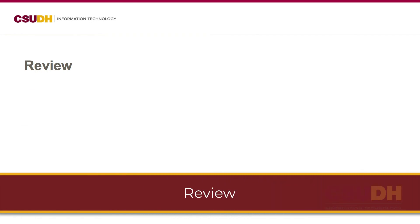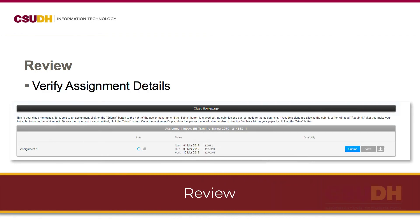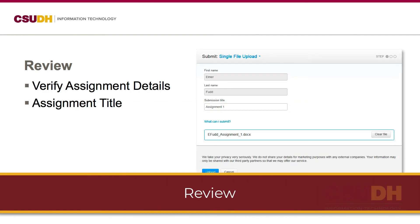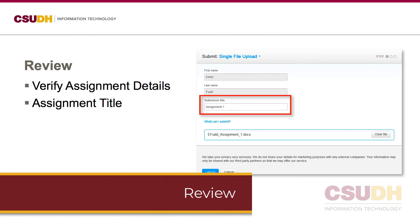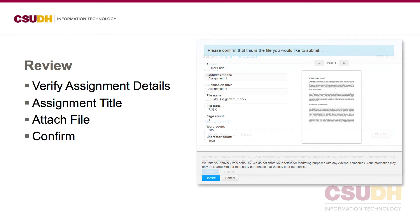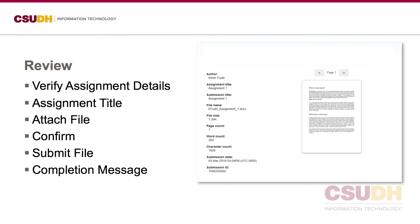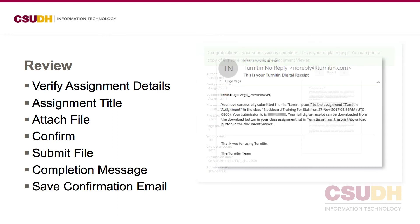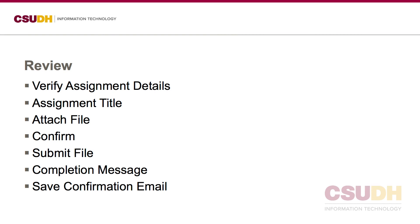To review the file submission process: first, review the assignment details. Next, provide a title for your assignment. Then, attach, confirm, and submit the file. Lastly, wait for the completion message and save the confirmation email. Follow these steps to ensure that your written assignment gets to your instructor for review.